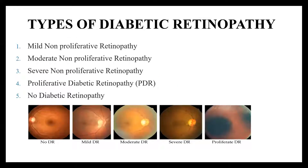We detect the types of diabetic retinopathy. There are two major types and five stages. The two types are non-proliferative and proliferative. Non-proliferative is easier to detect at early stages of the disease, while proliferative is the advanced form of the disease.